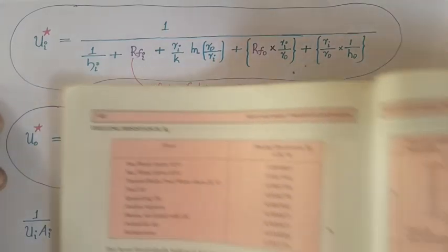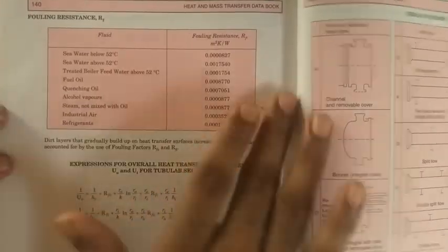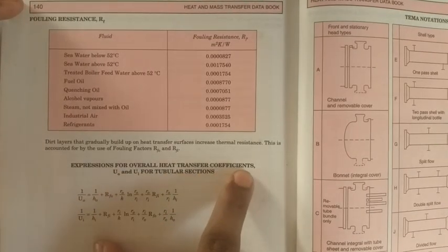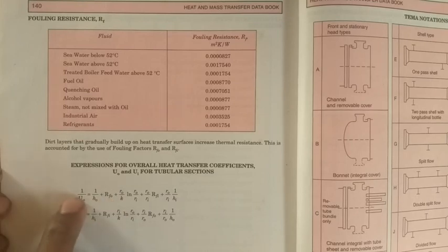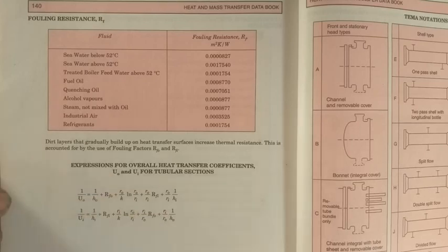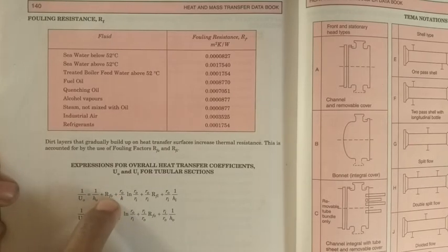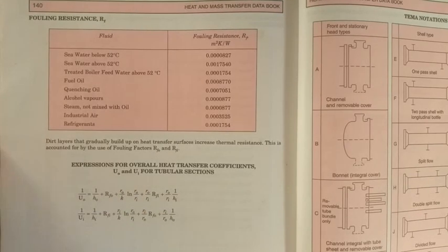In the data book, for the chapter on heat exchangers, you can find it from the contents. In the old data book it starts from page number 135, and on page number 140 you can see the expression for finding the overall heat transfer coefficient where fouling factors are also considered. It is given in terms of 1/U0 and 1/Ui. Note that in some textbooks — including Sachdeva — there is an error in this portion where a plus sign is missing. You can find the correct expression in the data book.